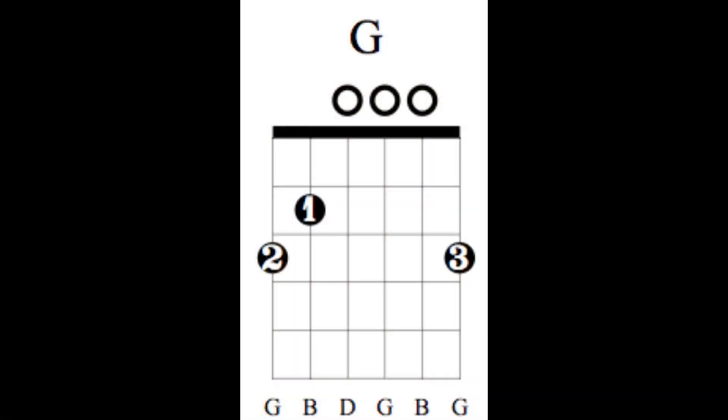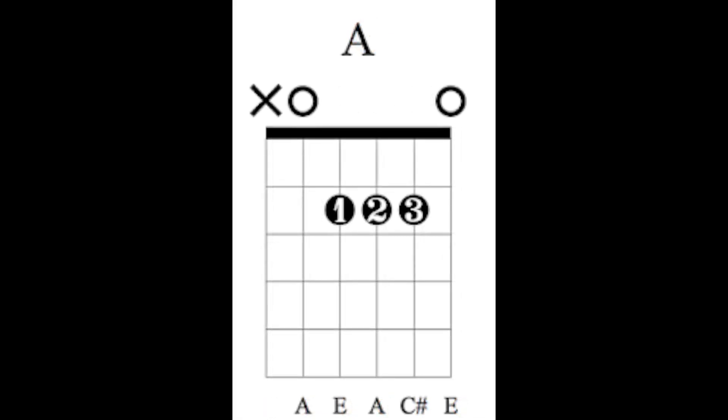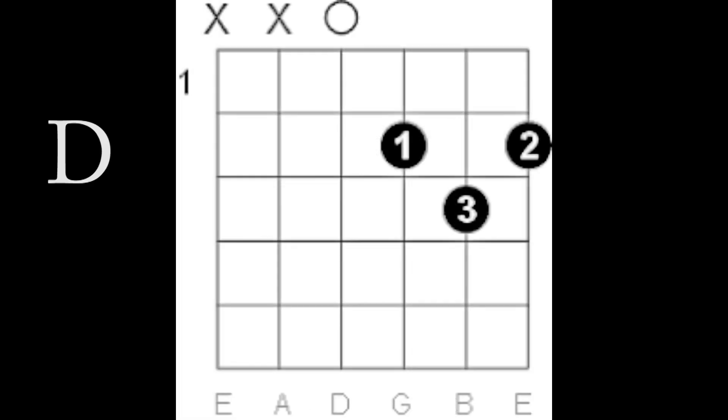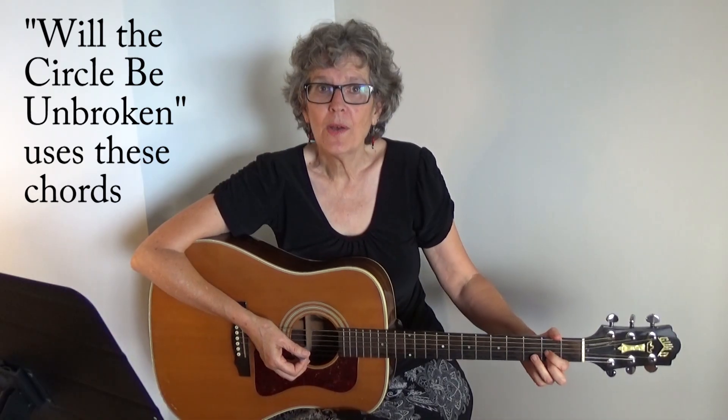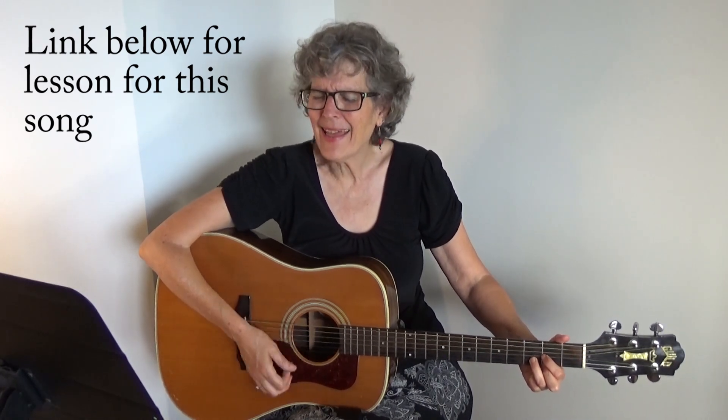Here's the last chord progression — the seventh one. Look at all these great chord progressions for so many wonderful songs. This one is G, A, and D. It works beautifully for 'Will the Circle Be Unbroken' — "Will the circle be unbroken, by and by Lord, by and by? There's a better home a-waiting in the sky, Lord, in the sky."